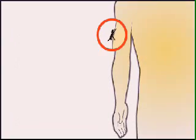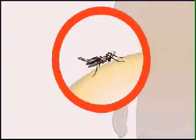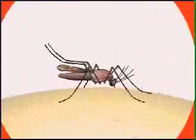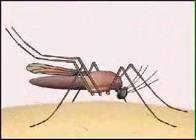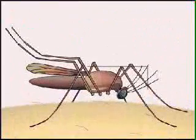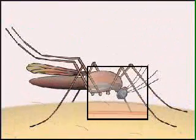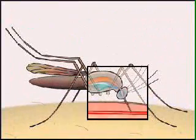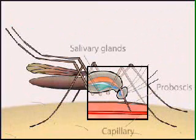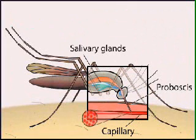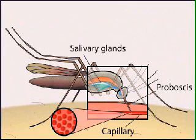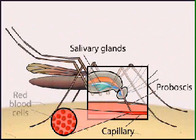The parasite Plasmodium falciparum is responsible for most of the world's malaria cases. It has evolved in concert with its human and mosquito hosts, and displays a complex life cycle that alternates between the two.